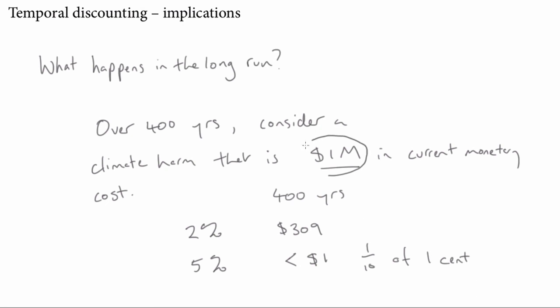So even harms that seem really quite serious become utterly trivial on slightly higher discount rates when you consider these long time scales. They still become quite small on more modest discount rates, but there's a huge difference between $309 versus one-tenth of one cent. This sort of approach says you might need to take some serious steps—if you can avoid this harm by spending $200, it's well worthwhile. This approach says you shouldn't do anything about that future harm; it's just irrelevant because it's so far in the future.